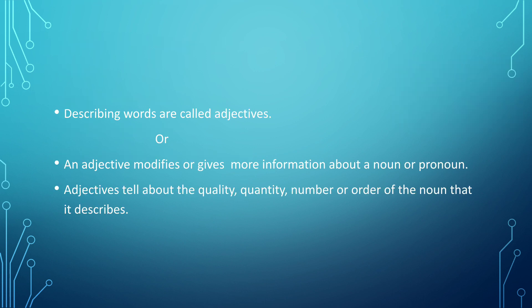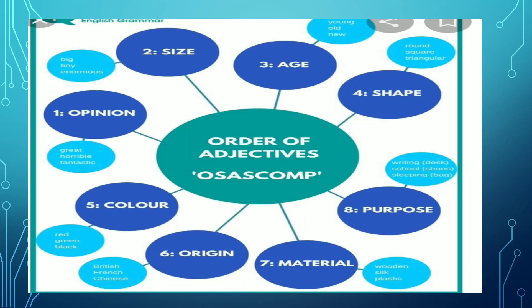So, students, describing words are called adjectives, or an adjective modifies or gives more information about a noun or pronoun. Adjective tells about the quality, quantity, number, or order of the noun that it describes.